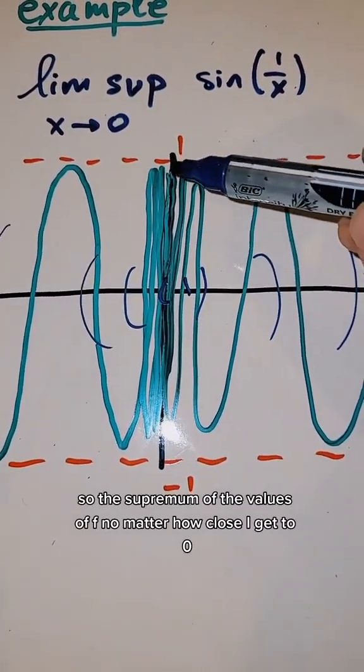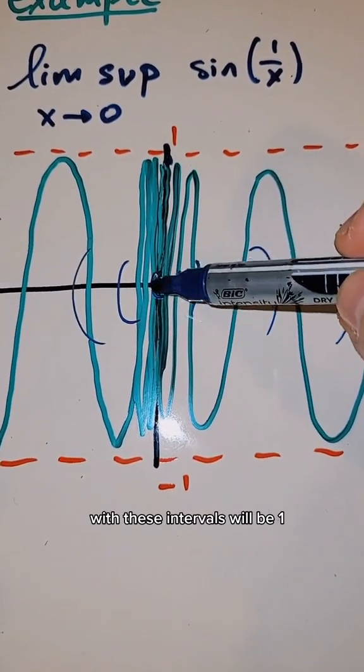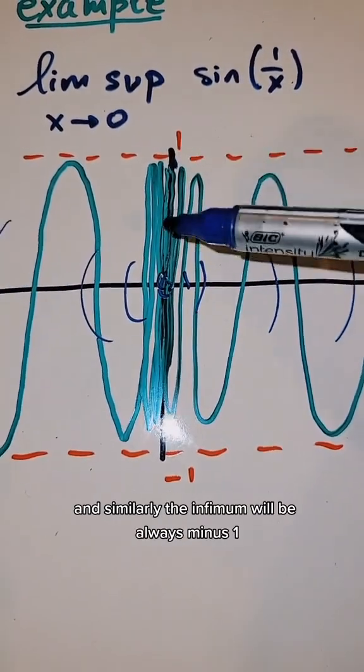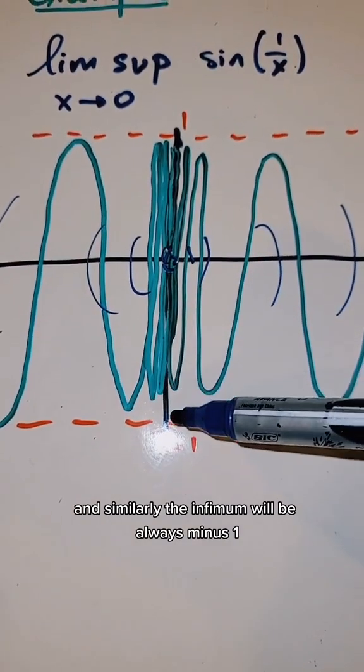So the supremum of the values of f, no matter how close I get to zero with these intervals, will be one. And similarly, the infimum will be always minus one.